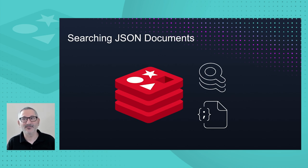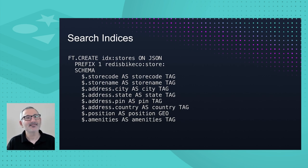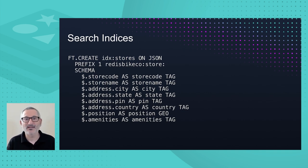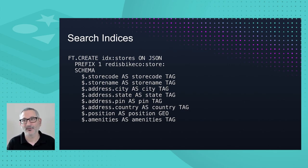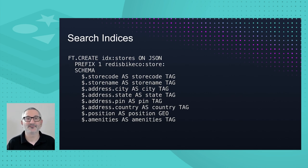We want to find documents that match search criteria when we don't know the document's key — for example, find all mountain bikes in a price range, or which stores have both Wi-Fi and a cafe. To do this, we'll define a search index that tells Redis Stack which documents to index and how to treat each field. Redis Stack will then automatically track changes in these documents and update the index accordingly. For our bike company, we'll create two indices: one for stores and one for bikes.